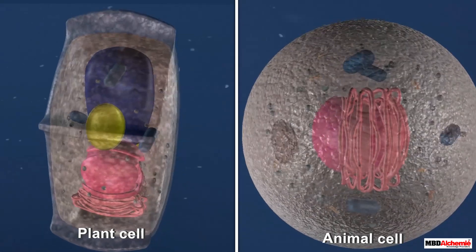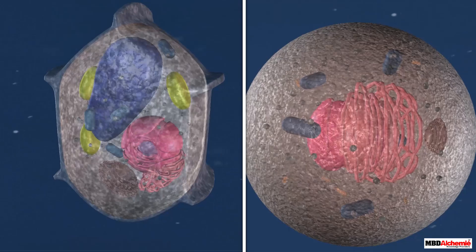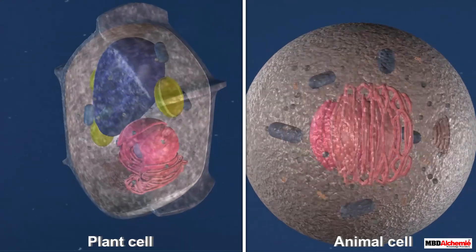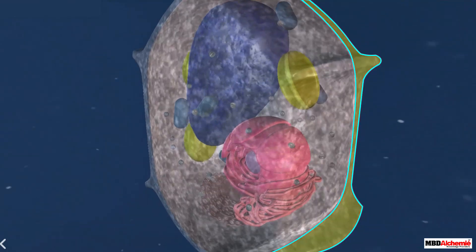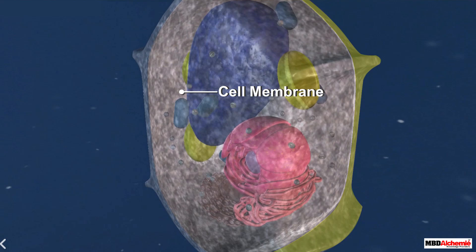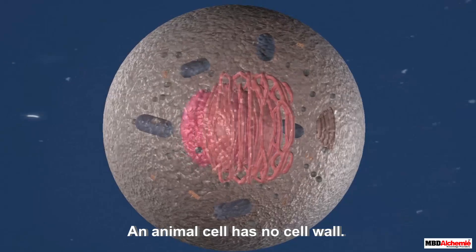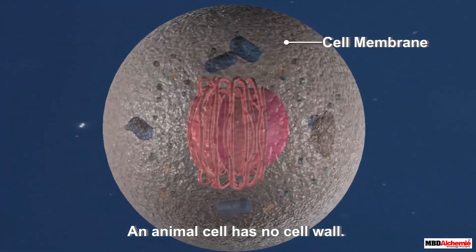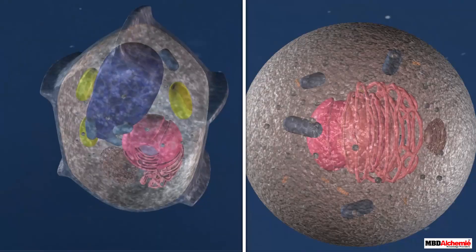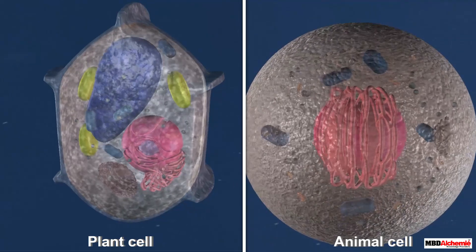Let us look at a plant cell and an animal cell closely and compare them. As you can see, both plant and animal cells appear different from the outside. On the outside, a plant cell is surrounded by a cell wall, and next to the cell wall, a cell membrane is present. However, in an animal cell, no cell wall is present — only the cell membrane surrounds the cell.